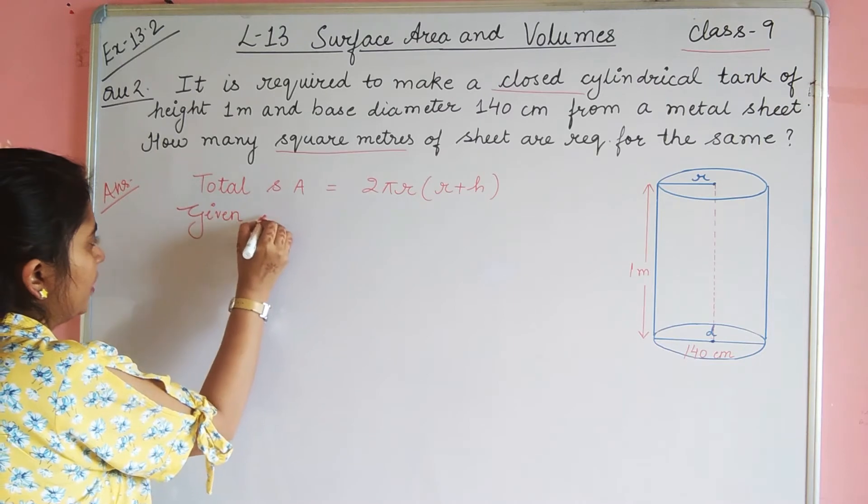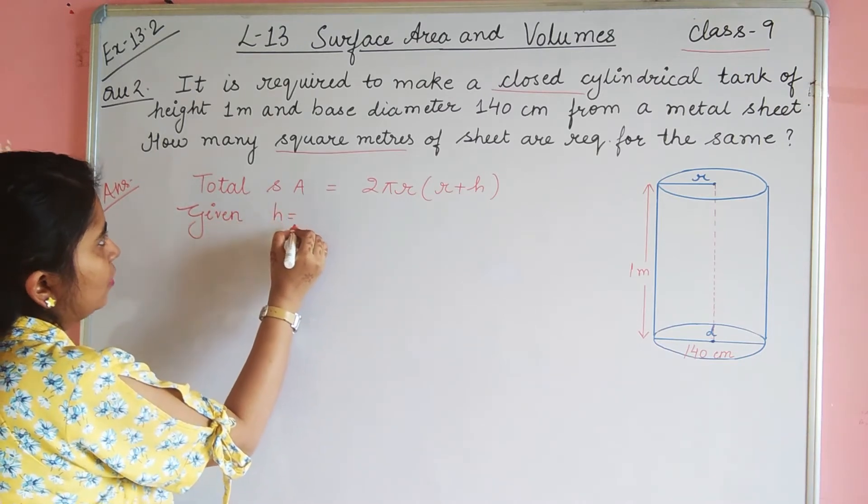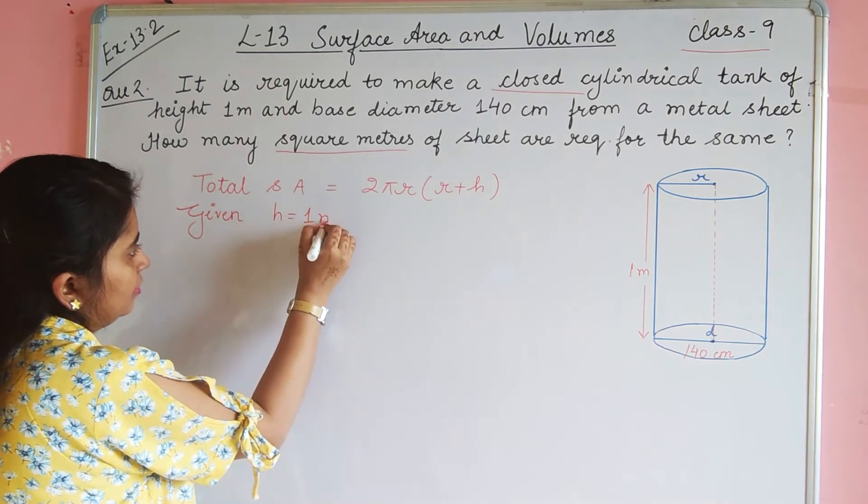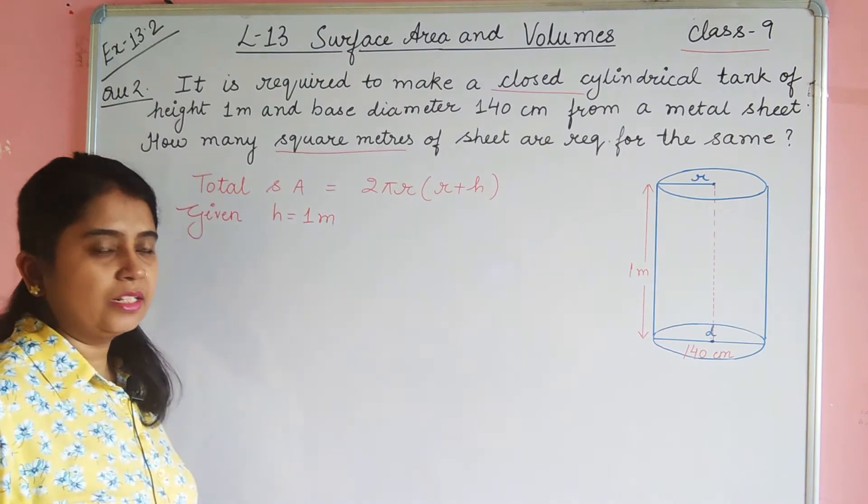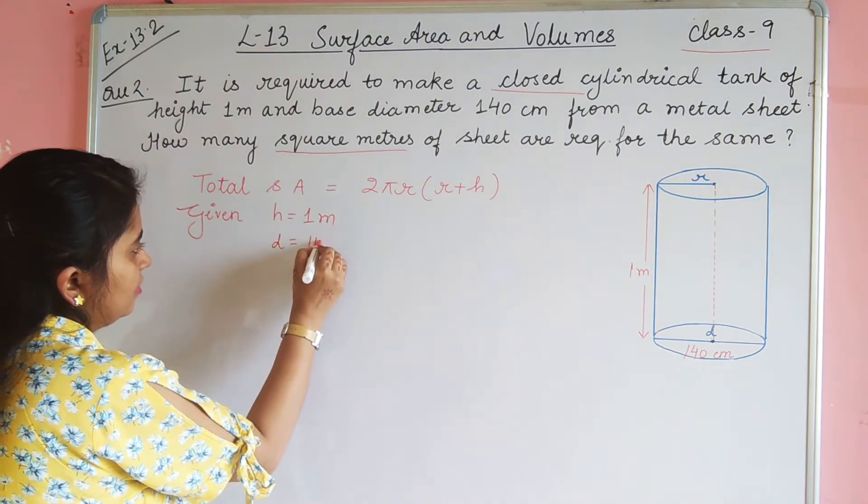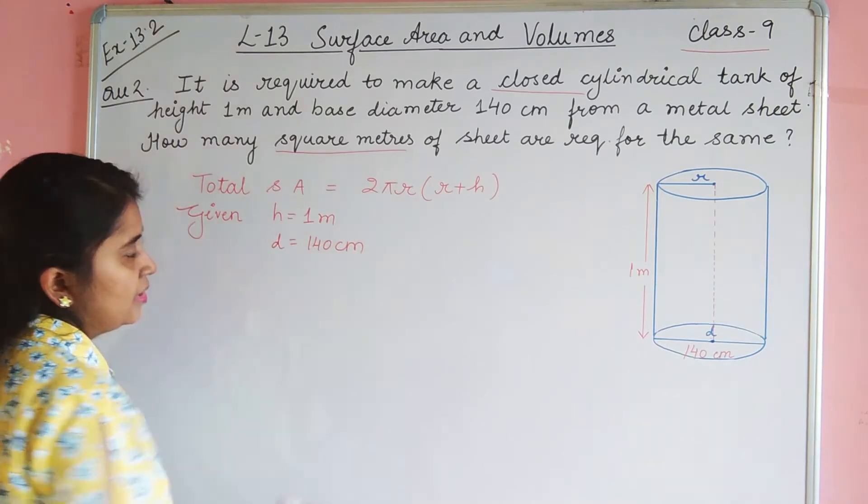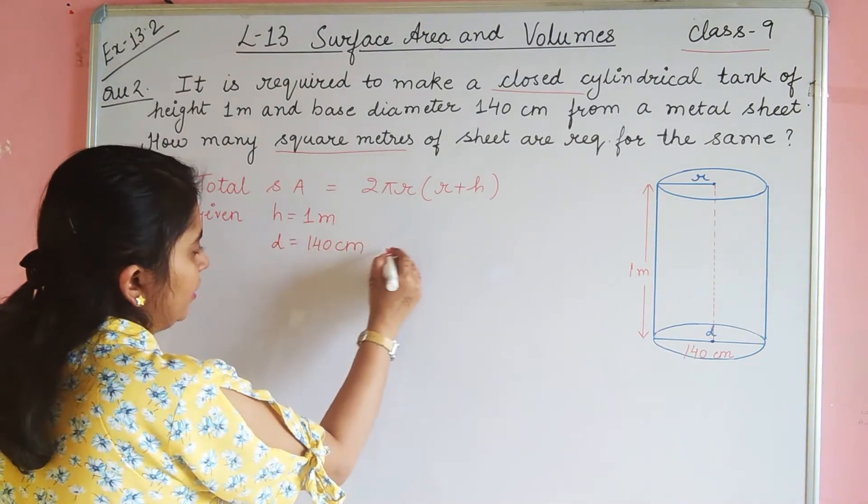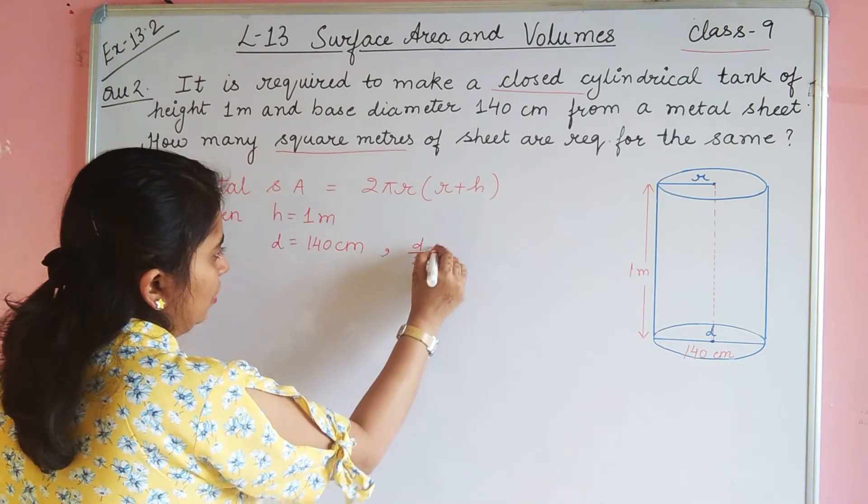The question is given: Height equals 1 meter, and diameter is 140 cm. If diameter is 140, then radius what will be?